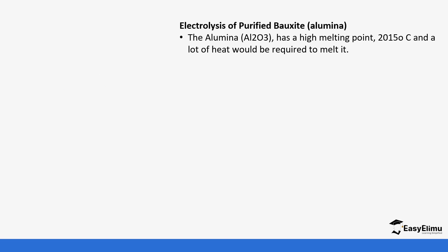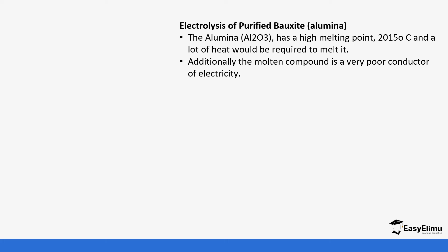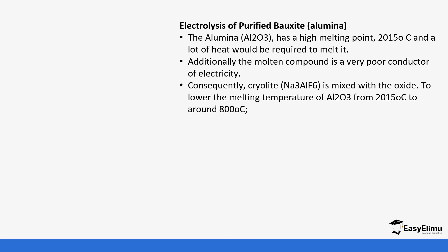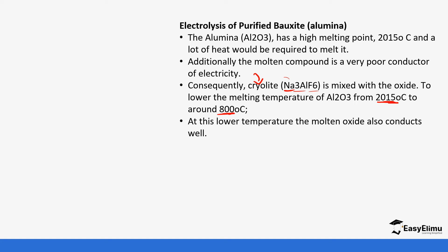For the electrolysis of aluminium oxide, it has a very high melting point of 2,015 degrees Celsius, so a lot of heat is required to melt it. The molten compound is also a very poor conductor of electricity. So instead, cryolite — a mixture of sodium aluminium fluoride — is added to the mixture. This lowers the melting point from 2,015 degrees Celsius to 800 degrees Celsius. At this lower temperature, the molten oxide can conduct electricity.